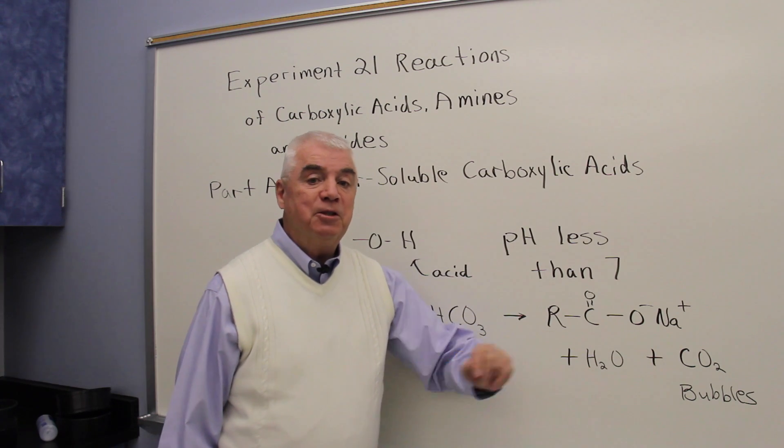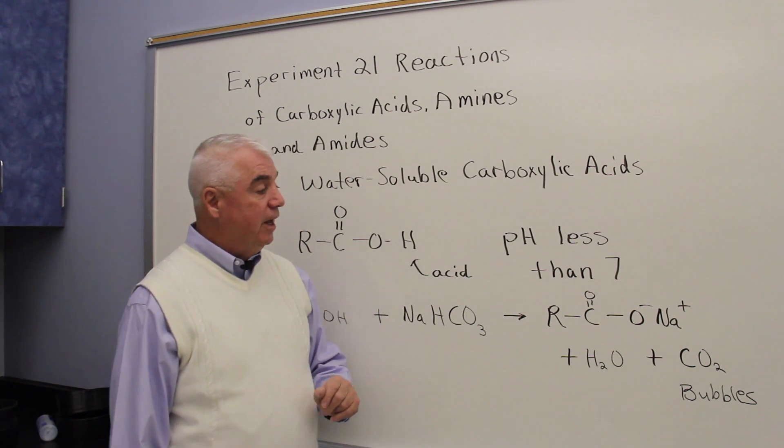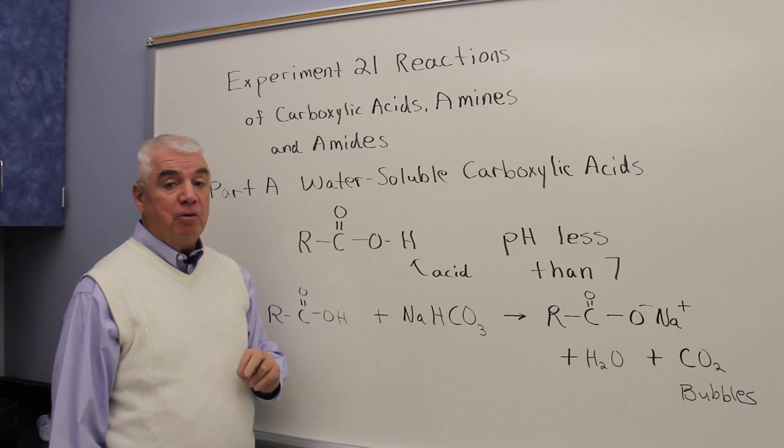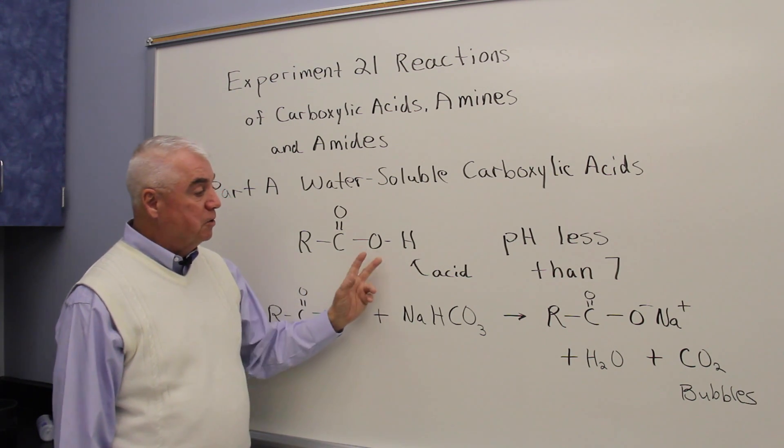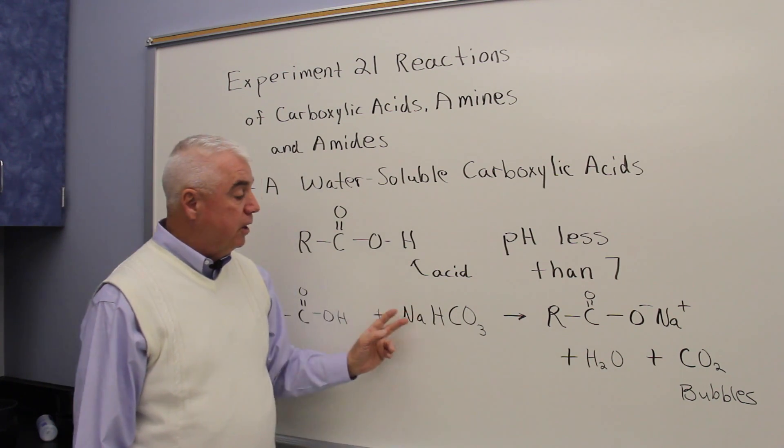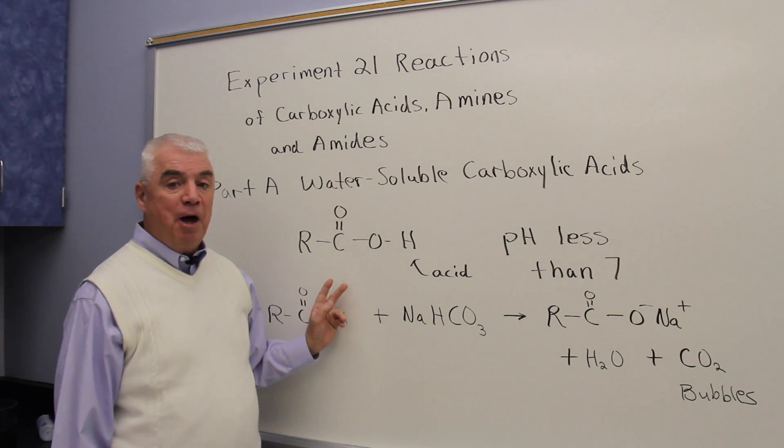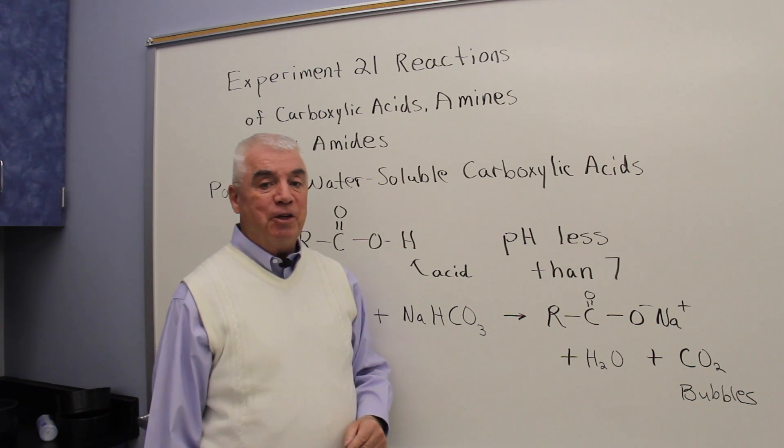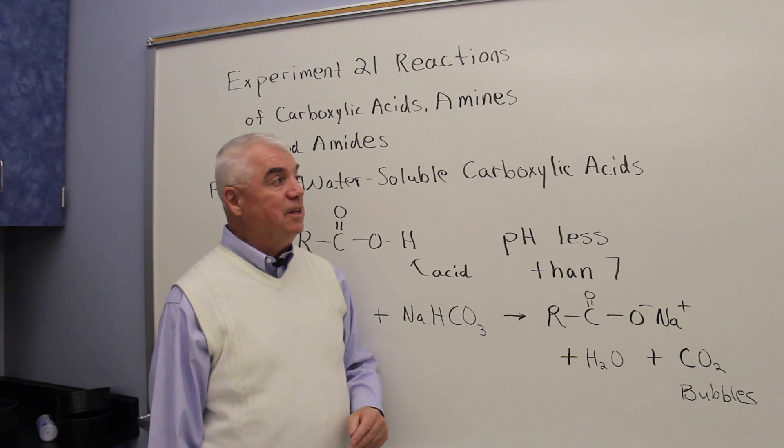A gas, that means that you'll see bubbles. And so if you have a pH less than seven you could say to yourself, hey I've got a carboxylic acid. And if you see bubbles when you treat the compound with sodium bicarbonate that's a good indication too that you've got a carboxylic acid.